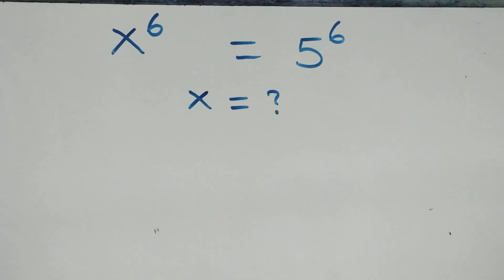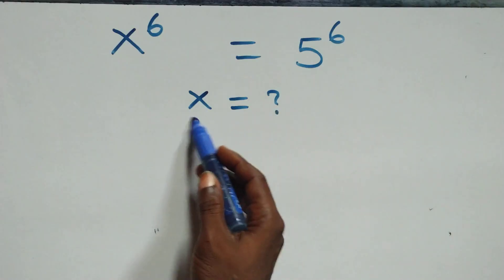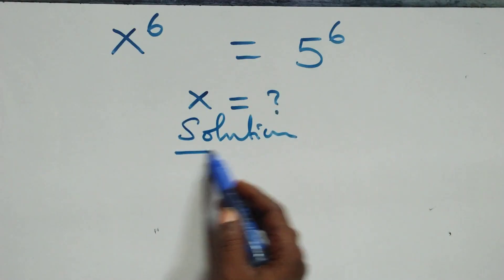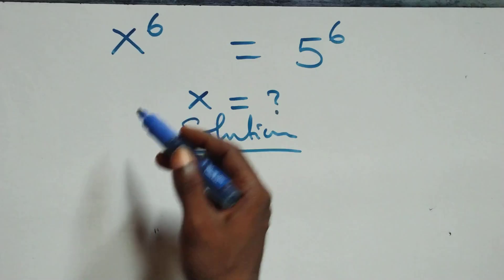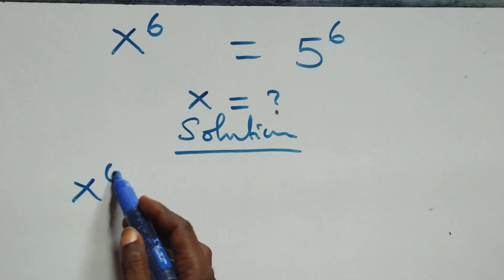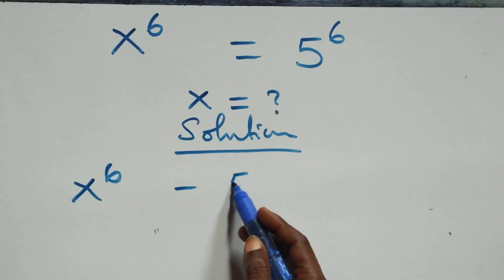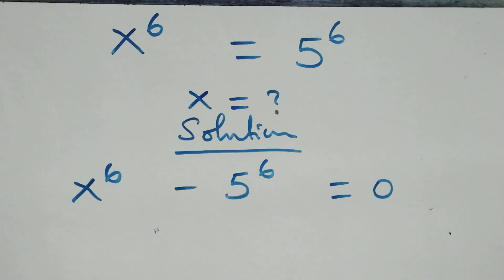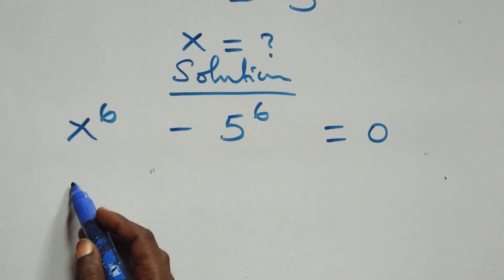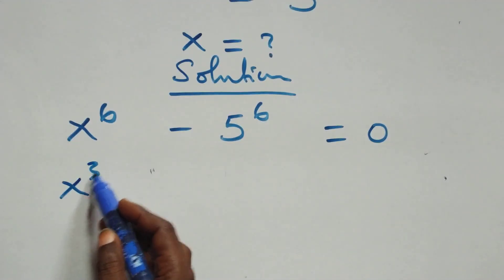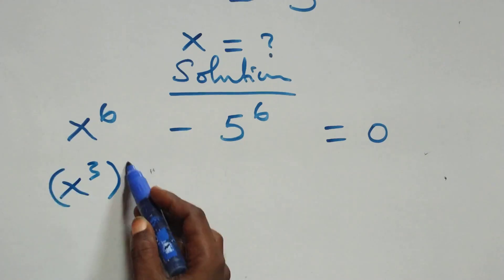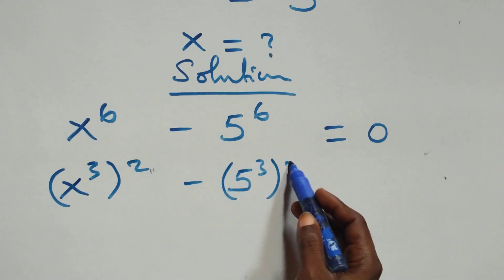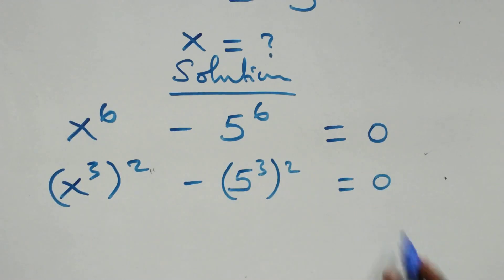Hello, you are welcome. We are going to solve this nice exponential equation. What we have here — we take 5 raised to power 6 to the left hand side, giving us x raised to power 6 minus 5 raised to power 6 equals zero.